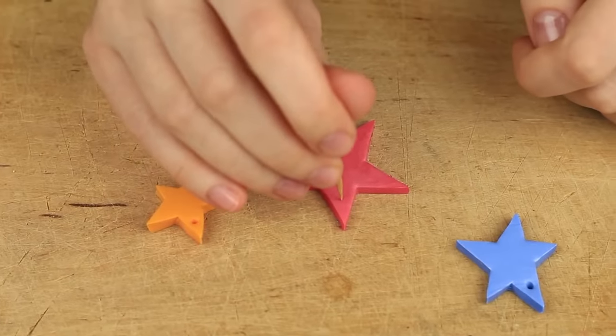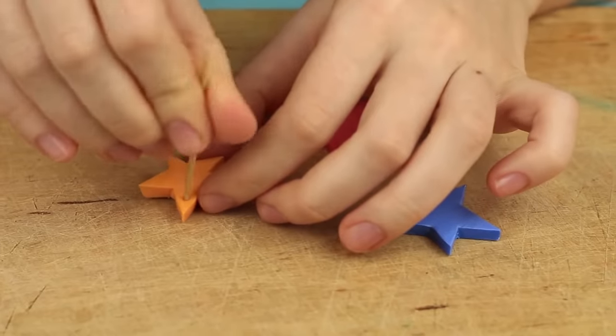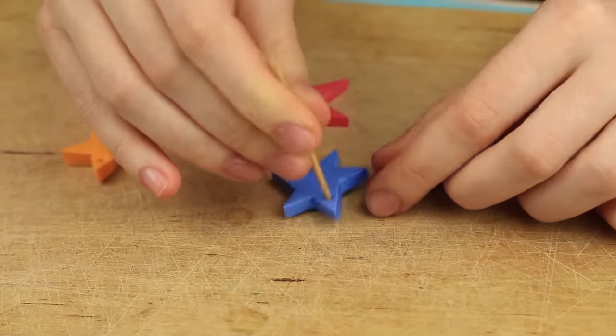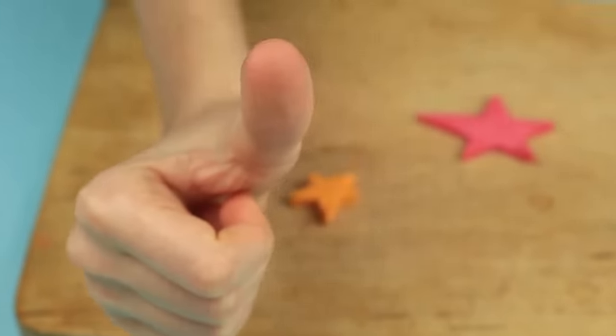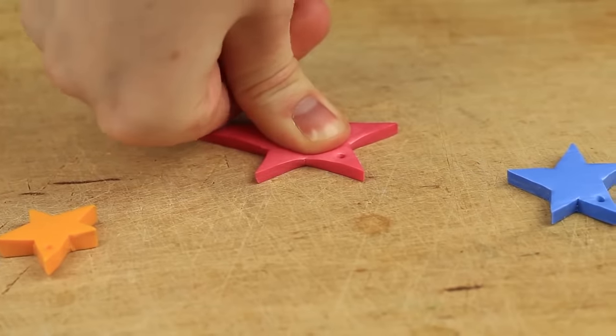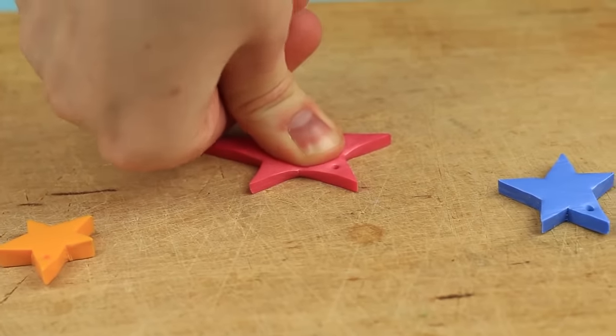Pierce the stars to hang on rings. Use a toothpick. And the central element of the craft is a fingerprint. Put a thumbprint on the biggest pink star. Press down well to make it clear.